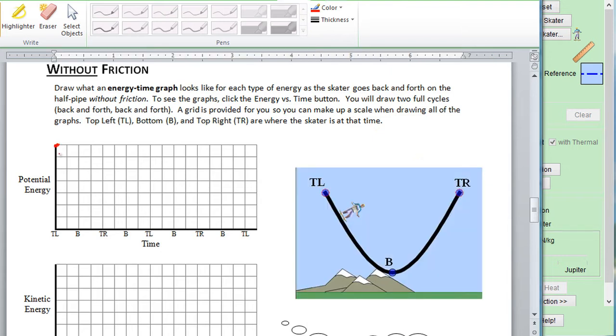So we can put a dot here. And he, as he's going back and forth, he has the least potential energy at the bottom. So as he's going from the top to the bottom, he is losing potential and then gaining potential energy.